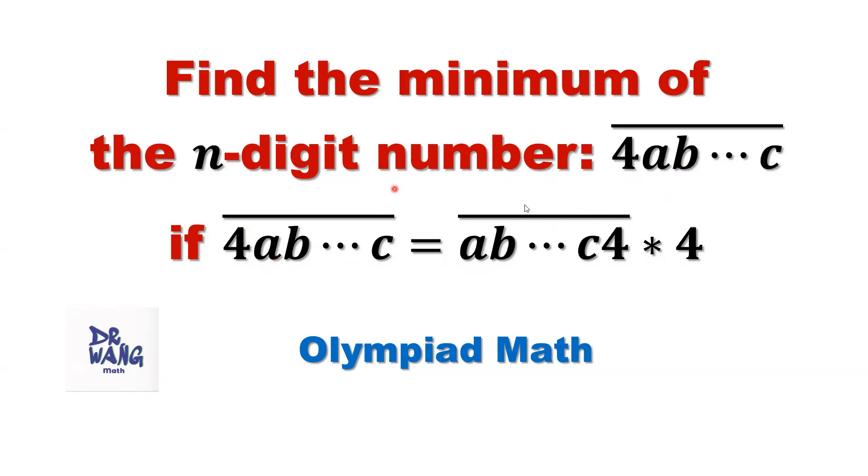They have this kind of relationship. This is the condition. What is this? This is the original number. If we move the first digit to the last digit, what's the relationship between the two numbers? The original number equals the new number times 4.